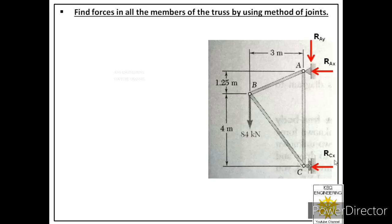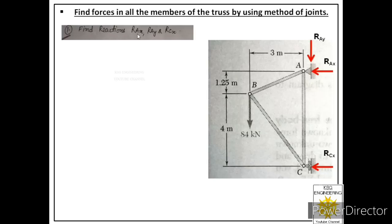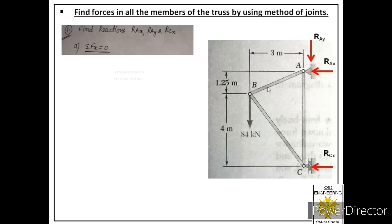Now we use these three equations to find RAX, RAY, and RCX. Applying ΣFx = 0: we look at all horizontal forces in the system. There is one external force of 84 kN acting at joint B in the Y direction, and out of the four forces total, only two forces are acting in the X direction — both acting towards left.